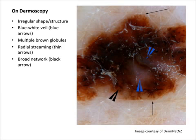For the keen learners, this is what a melanoma looks like under dermoscopy, a tool used by dermatologists to have a closer look at dermatological lesions. Here you can see multiple brown globules, an irregular shape to the lesion, a blue-white veil as highlighted by the blue arrows, something called radial streaming as pointed out by the thin arrows, and broad networking pointed out by the thick black arrow. For those who are keen about dermoscopy and want to learn more, you can go to DermNet NZ, where they have more images and material for you to learn from.